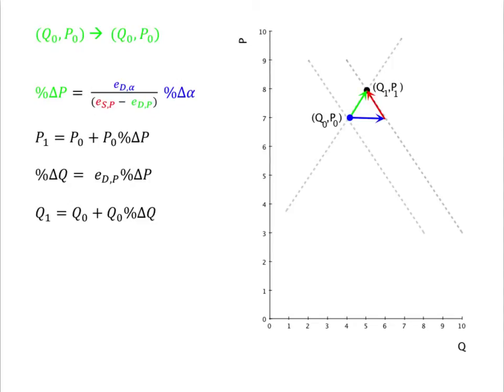The idea is that we can measure the shift from Q0, P0 to Q1, P1 based solely on the size of the demand shifter and the known elasticities. Holding price constant at P0, a change in a demand shifter alpha, say an increase in the price of a substitute or family income, would shift out quantity demanded by the percentage change in alpha times the alpha elasticity of demand. But that would result in excess demand driving up price. The percentage change in the price needed to restore equilibrium is a function of both the price elasticity of demand and the price elasticity of supply.